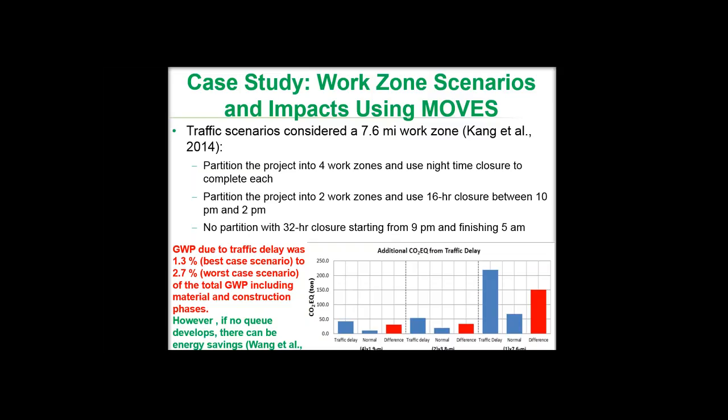From this exercise we found that global warming potential due to traffic delay can be 1.3 to 2.7 percent in the worst case scenario of total global warming potential, including material and construction phases. However, another study focusing on work zone delays and environmental impact illustrated that if there is no queue developing, there can even be energy savings. This indicates the importance of using appropriate tools for both traffic simulations and emission simulations.